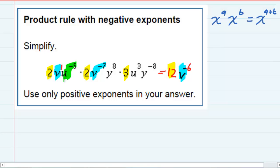I see some u's here. I've got u negative 5 and u3. When I multiply those, I again keep the base u, but I add the exponents. Negative 5 plus 3 gives me a negative 2.